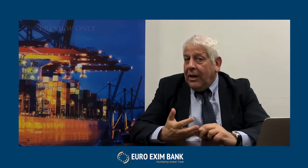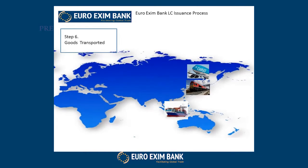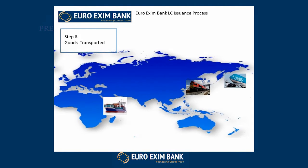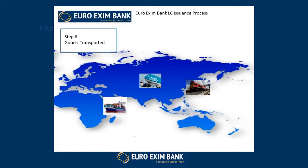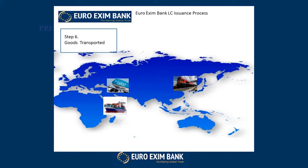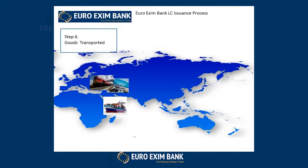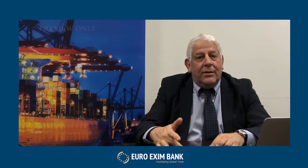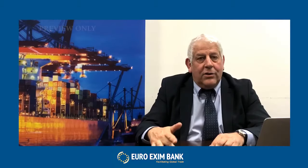Goods are then transported — this could be by ship, which can take a number of weeks, by air for smaller goods, or by rail. We're experiencing more trades taking place with the One Belt route coming from China through Europe into London with trains carrying multiple goods. There are many different players involved: importers, freight forwarders, insurers, cargo handlers, docks, and so on involved in the physical movement of the goods themselves.